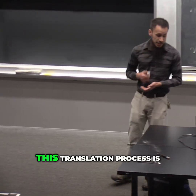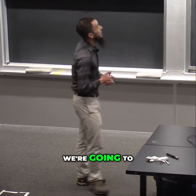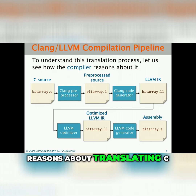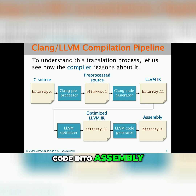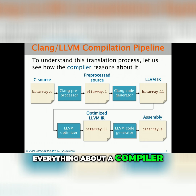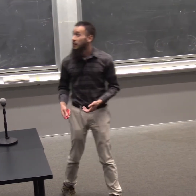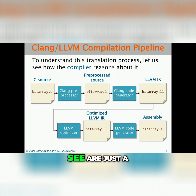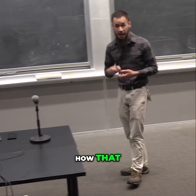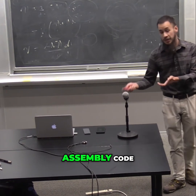What we're going to do today to understand this translation process is take a look at how a compiler actually reasons about translating C code into assembly. This is not a compiler class — 6.172 is not a class you take if you want to learn how to build a compiler — and you're not going to need to know everything about a compiler to follow today's lecture. But we will see just a little bit about how the compiler understands a program, and later on, how it can translate that program into assembly code.